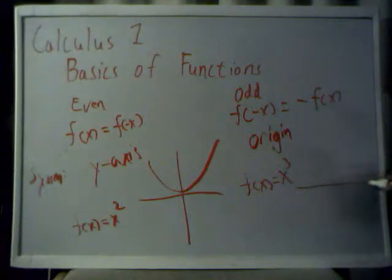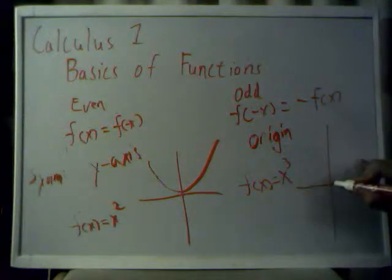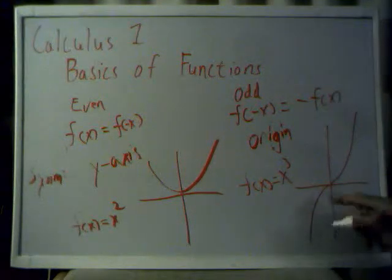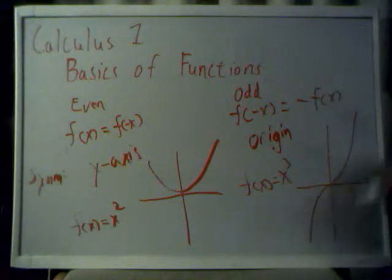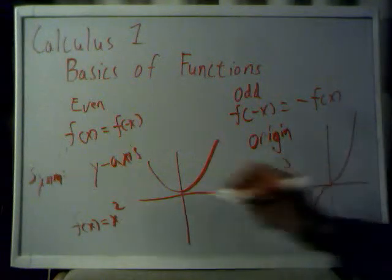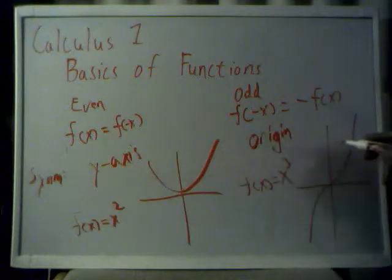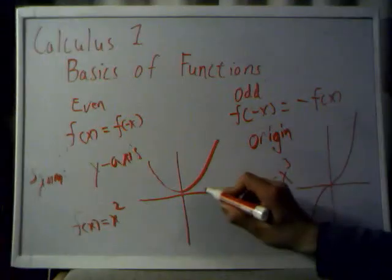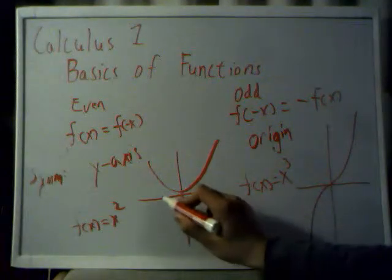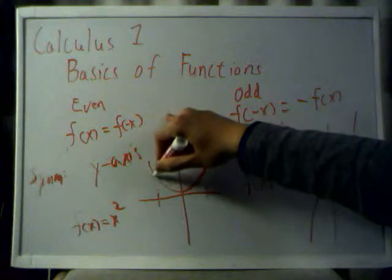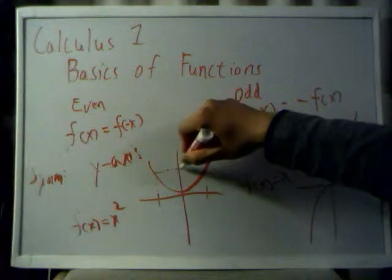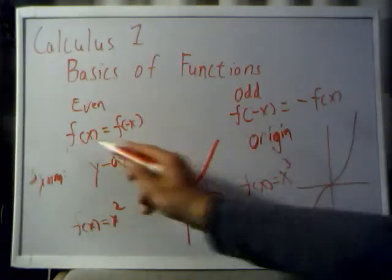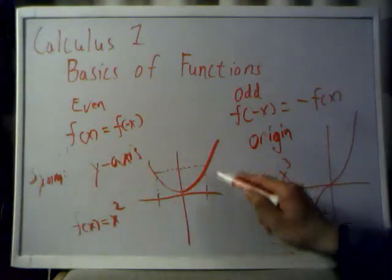So for an odd function, an example would be f of x is equal to x cubed — this is our hyperbola. Here's your origin point, here's this side of the function, and here's your other side of the function. If you basically just rotate across the origin, they'll match up. This is rotational symmetry. So here you have, let's say this is x and this is negative x, and if you draw them up to the curve, you can see that both of these have the same f of x value. So this is why f of x is equal to f of negative x.